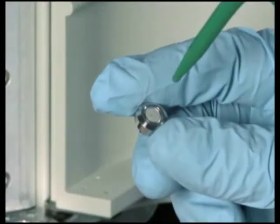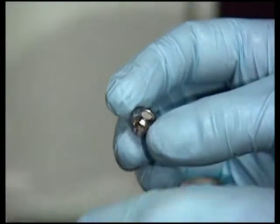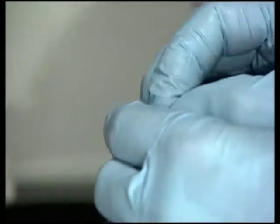Wet the replacement inline filter element with alcohol. Hold the porous side of the new filter up and insert the filter into the outlet side of the housing.